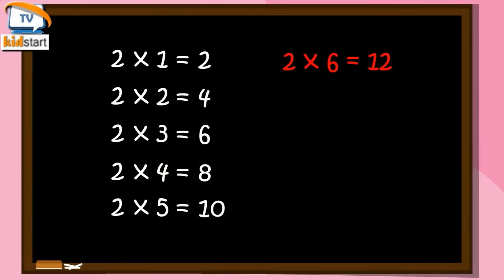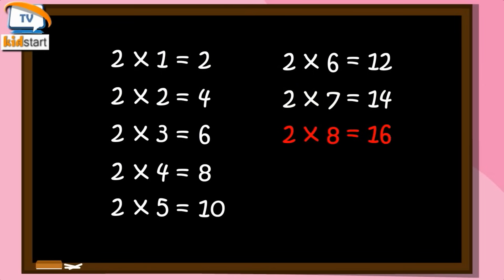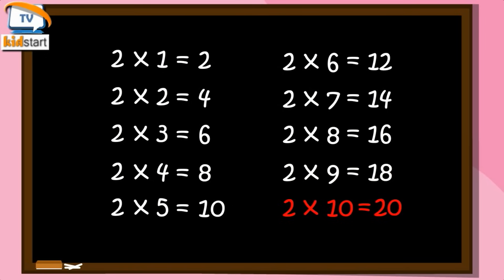Two Sixes are Twelve. Two Sevens are Fourteen. Two Eights are Sixteen. Two Nines are Eighteen. Two Tens are Twenty.